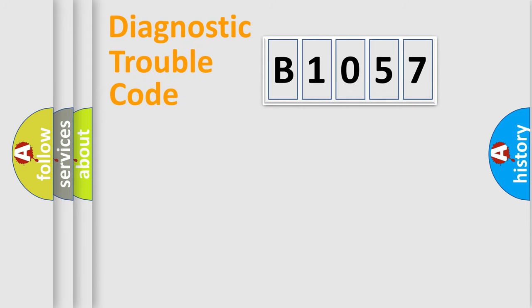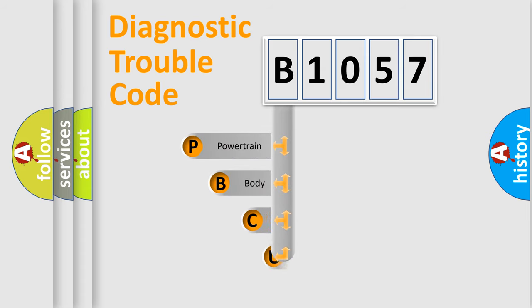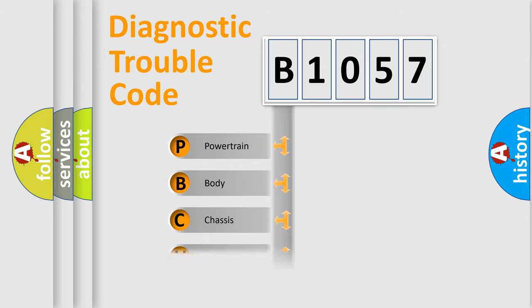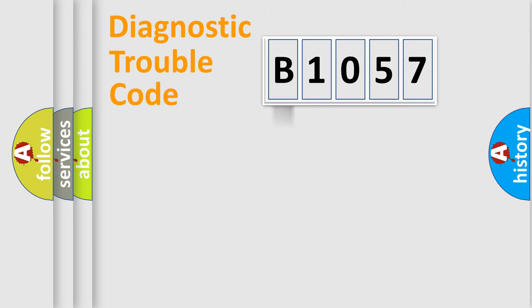Let's do this. First, let's look at the history of diagnostic fault code composition according to the OBD2 protocol, which is unified for all automakers since 2000. We divide the electric system of the automobile into four basic units: powertrain, body, chassis, and network.